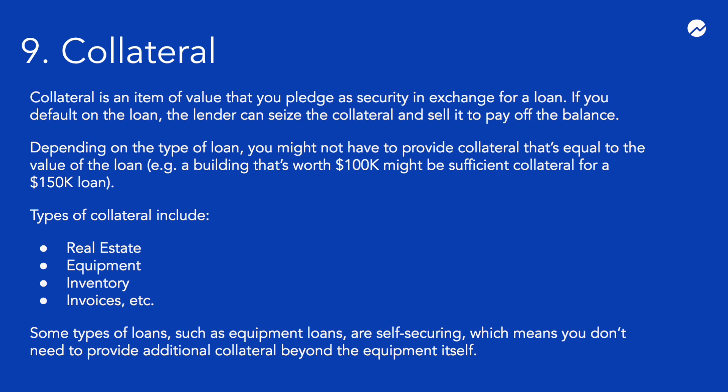Lenders don't like to go through this seizure and sale process, but it can happen if several months or years have passed since you've made a timely loan payment. Depending on the type of loan you have, you might not have to provide collateral equal to the value of the loan—for example, a building worth $100,000 might be sufficient collateral for a $150,000 loan. Some types of loans, such as equipment loans, are called self-securing loans, meaning you don't need to provide additional collateral beyond the equipment itself. That can be very helpful for new businesses, which often lack a lot of collateral.